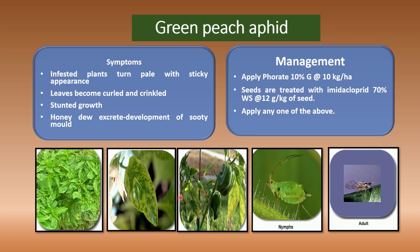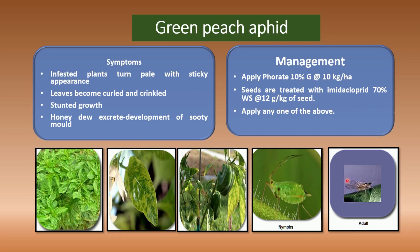For management of aphids, apply carbofuran at 10% at 10 kg per hectare, and treat seeds with imidacloprid 70% wettable sulfur at 12 grams per kg of seed — apply any one of the above. For identification: in the nymph stage they are initially greenish but soon turn yellowish. In the adult stage, green peach aphids are yellowish green in color.